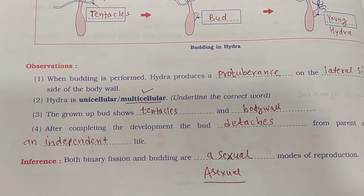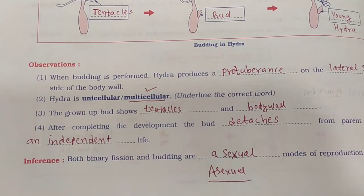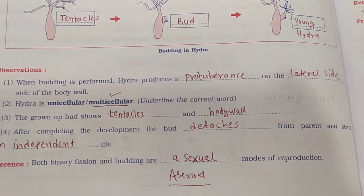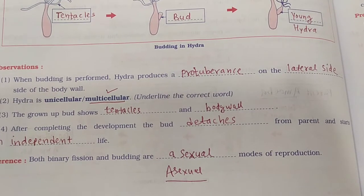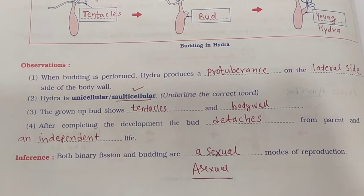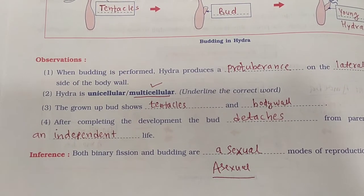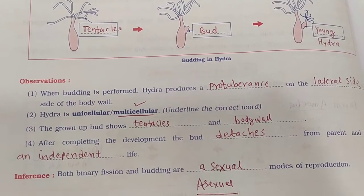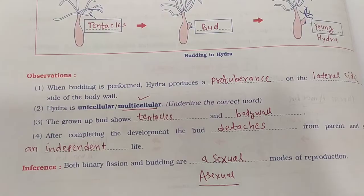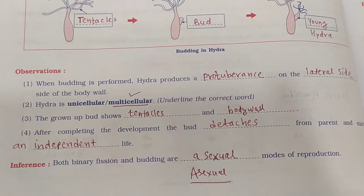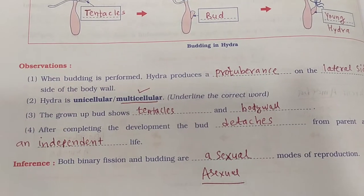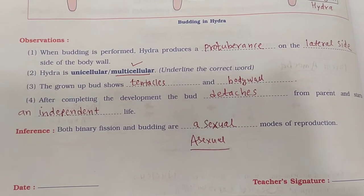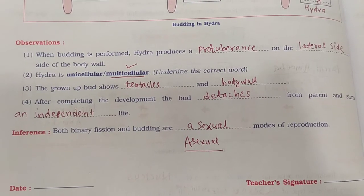The fourth observation is that after completing development, the bud detaches from the parent and starts an independent life. Inference: both binary fission and budding are asexual modes of reproduction.